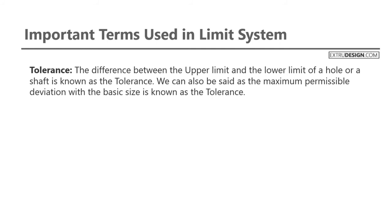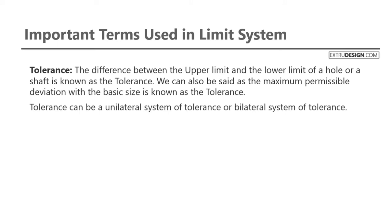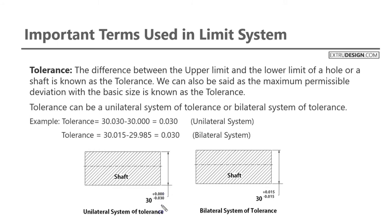The next term is tolerance. The difference between the upper limit and lower limit of the hole or shaft is known as tolerance. We can also say that the maximum permissible deviation from the basic size is known as tolerance. Tolerance can be unilateral or bilateral. In a unilateral system the tolerance is added either on the positive side or negative side, but in a bilateral system the tolerance is added on both positive and negative sides.